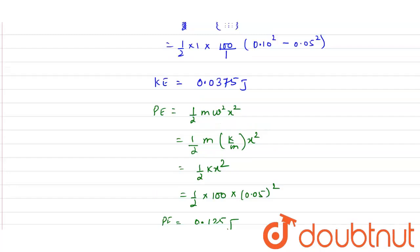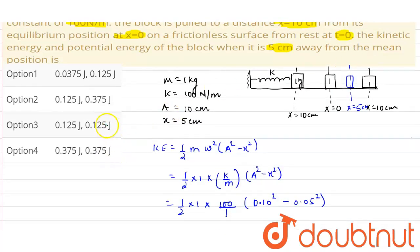Now choosing from the options, we get our option as option number 1, that is 0.0375 joules and 0.125 joules is the correct option. Thank you.